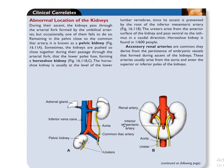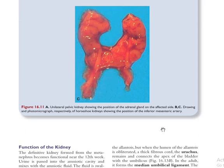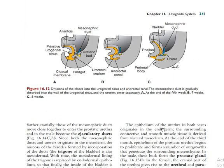Some clinical correlations: in this case you have a pelvic kidney, which has not ascended. In this other case you have a horseshoe kidney, where the lower poles are fused. This horseshoe kidney has ascended but the inferior mesenteric artery is blocking it from ascending further.